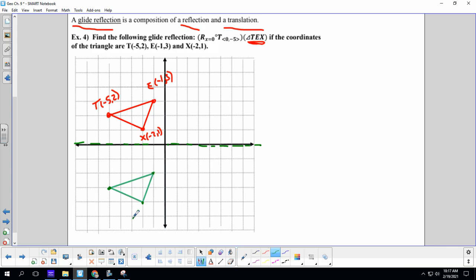So this was X, and it is now negative two, comma, one, two, three, four, negative four. This was E, we're going to call him E prime, and he was at negative one, three. He is now at negative one, negative two. And this is T prime. He used to be at negative five, two, and now he is at negative five, negative three.